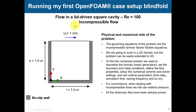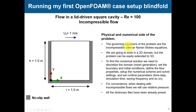The first tutorial is the lid-driven cavity — a classical validation case in CFD. We have flow inside a cavity with walls, a boundary layer, and a moving wall with a velocity applied here, generating a recirculation. Reynolds number is 100, so it's a laminar case. It's also a 2D case and we have plenty of validation data to compare against.